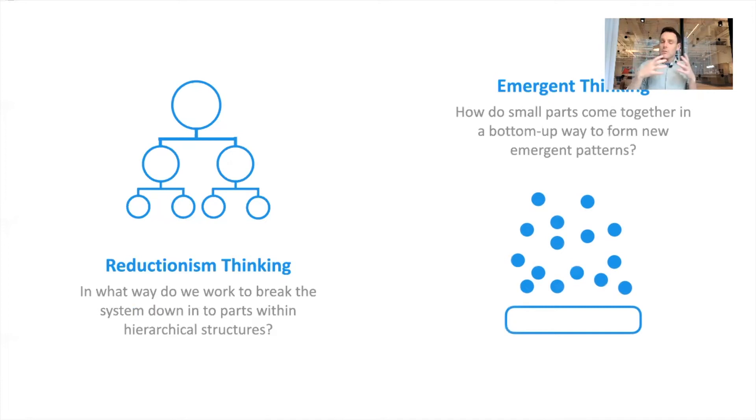Emergent thinking is kind of at the core of systems thinking. We're asking, again, in the last module we talked about synthesis. So this is asking, what happens when we put things together? When small parts come together in a bottom-up way to form new emergent patterns, what happens there?